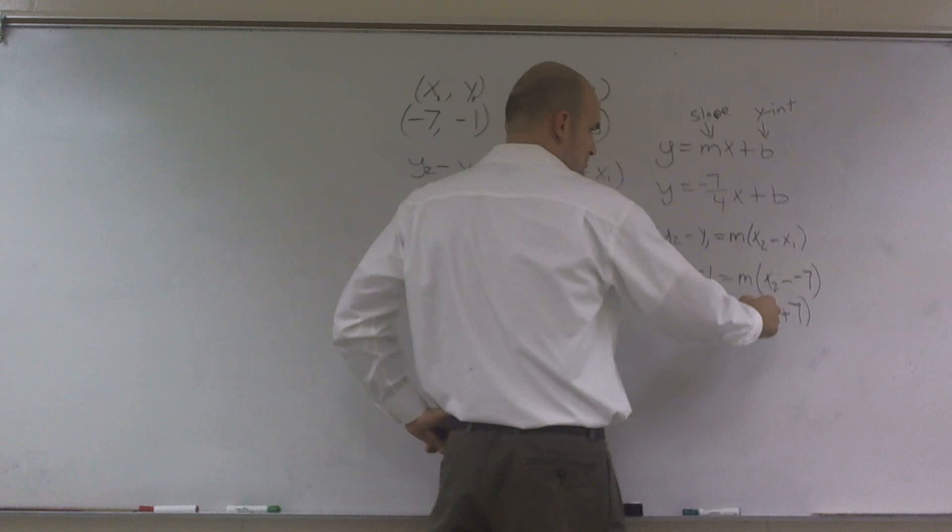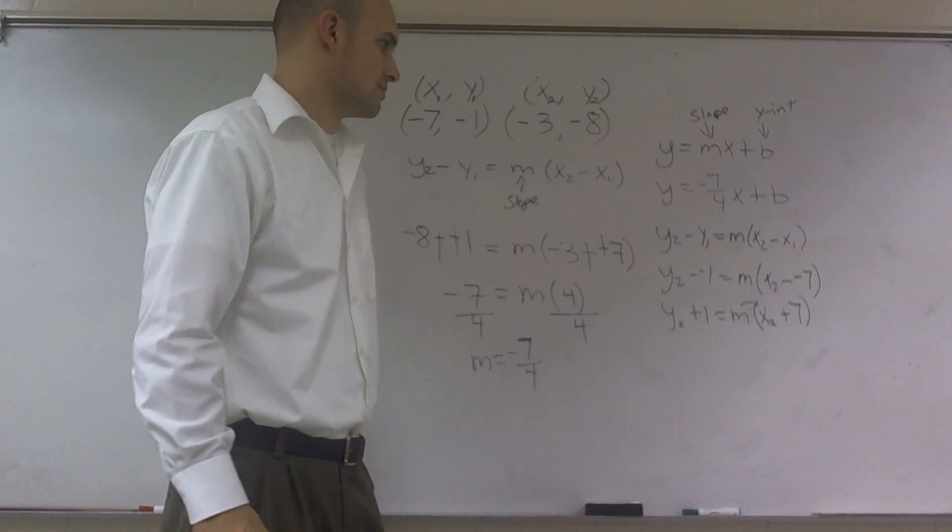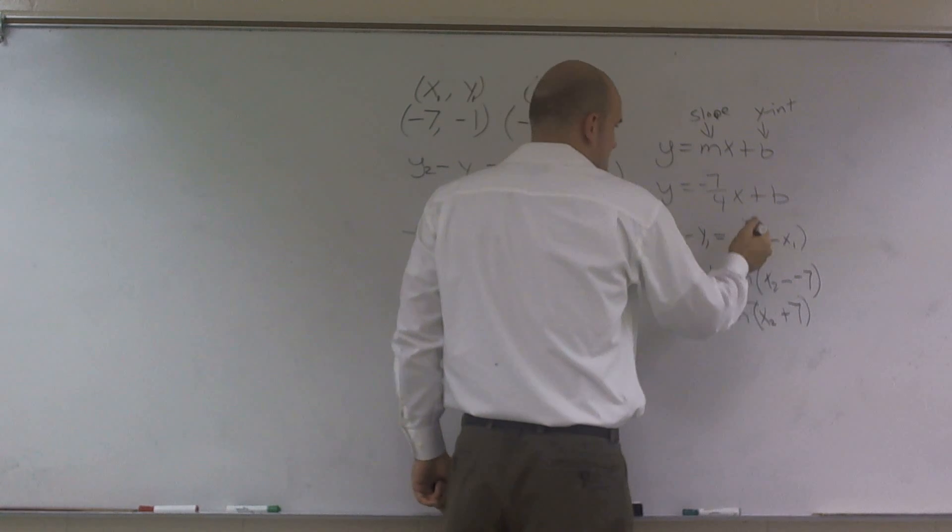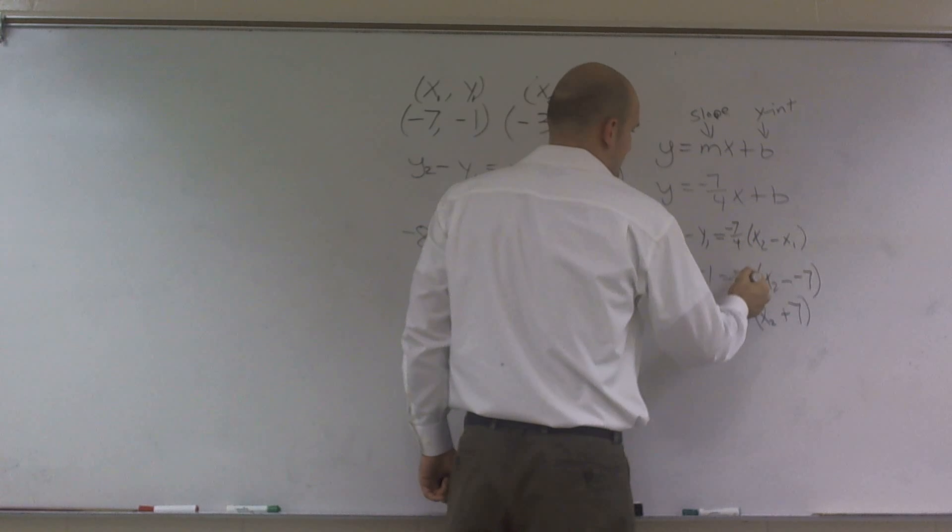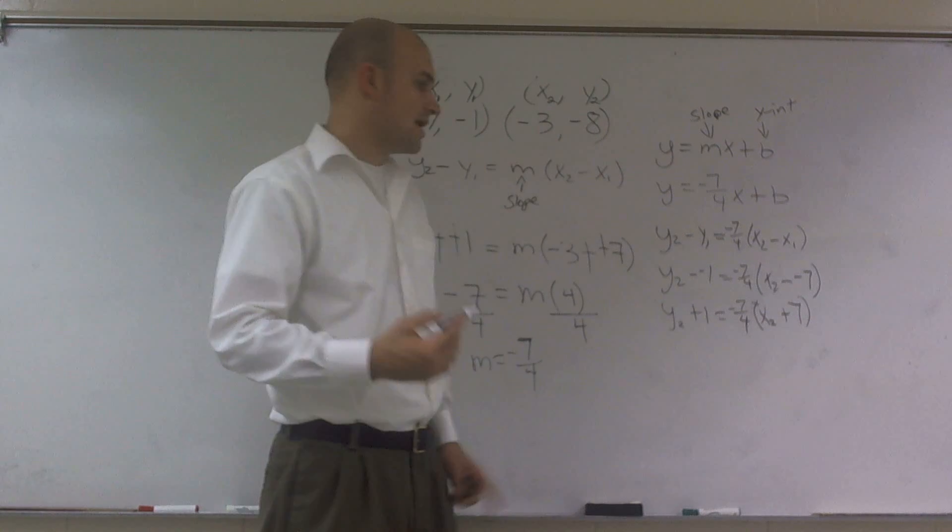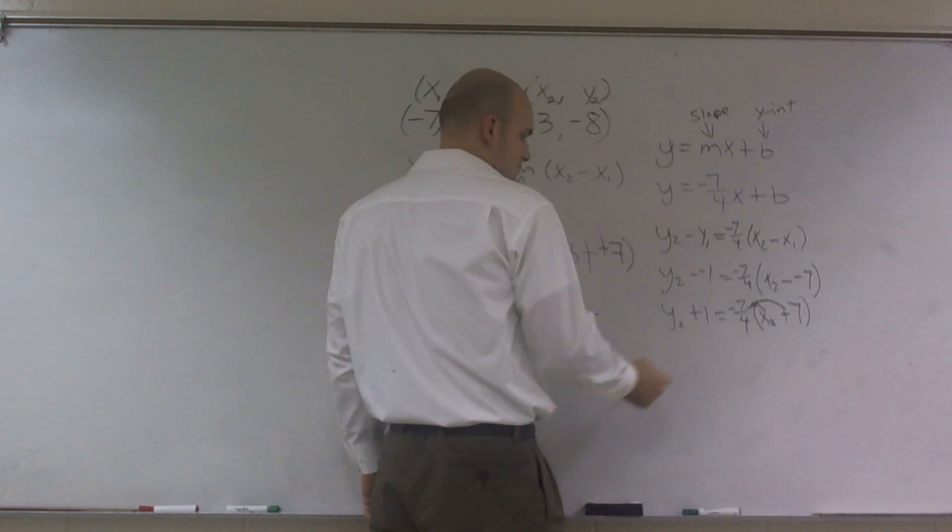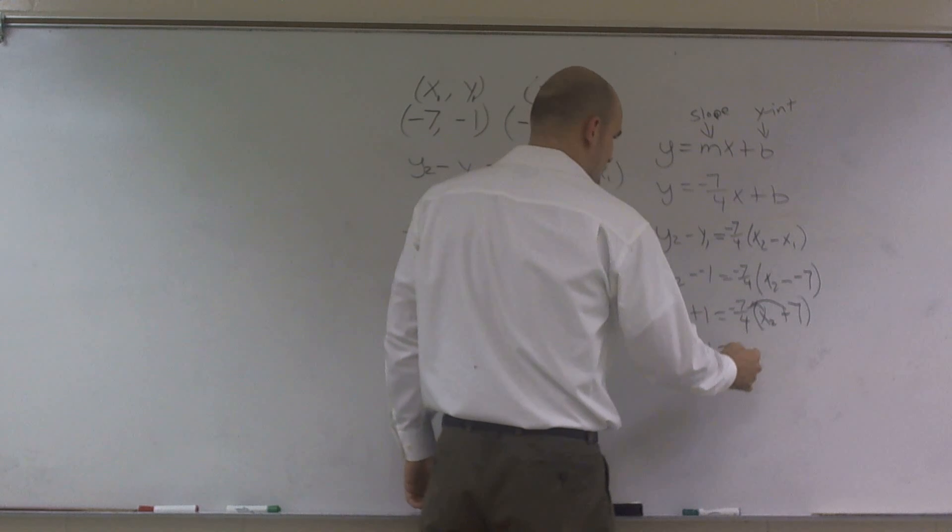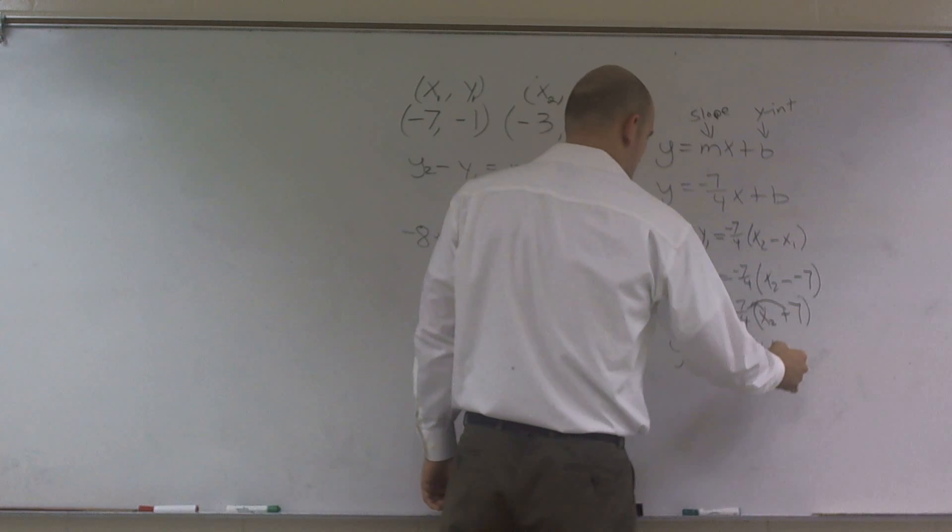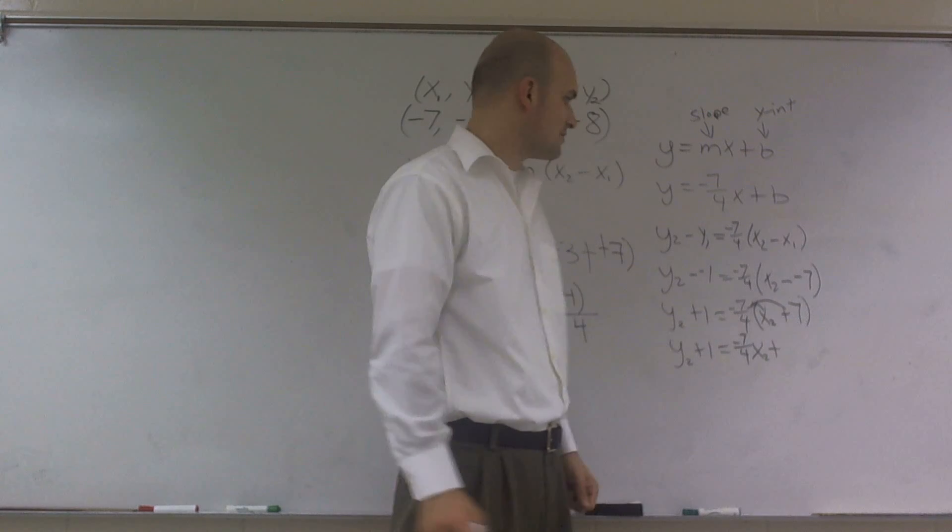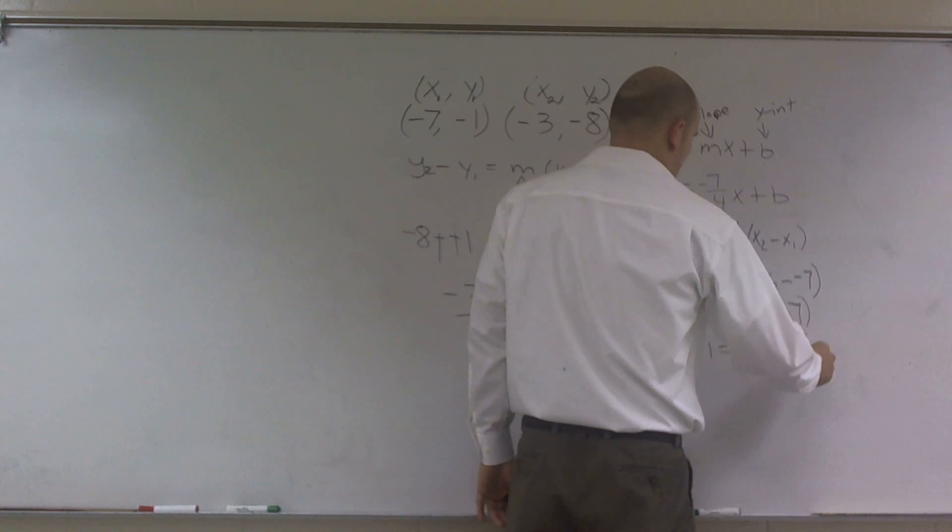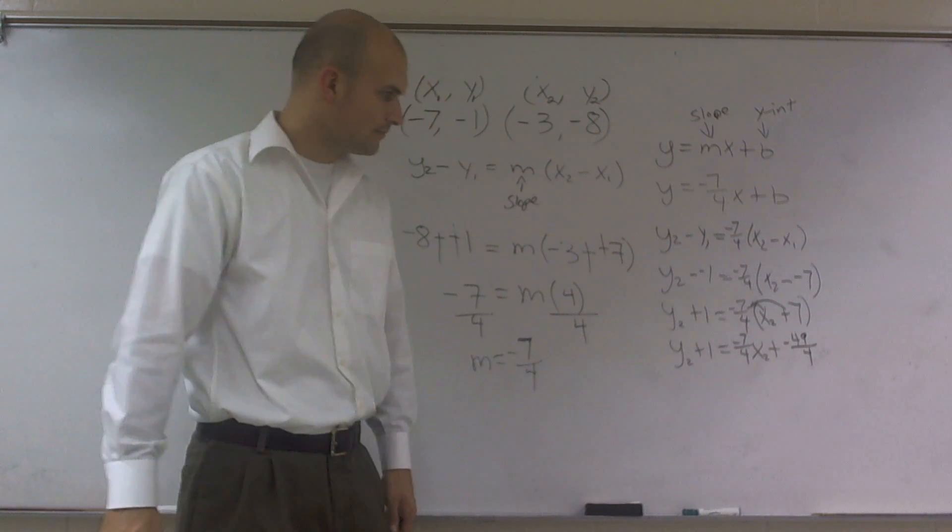Then, now what I have to do is use my distributive property. And what is our m? Our m is a negative 7 fourths, right? So we've got to write that in for m. OK? So now I have to use my distributive property. So I have y2 plus 1 equals a negative 7 fourths x2, plus a negative 7 fourths times 7, which is going to give me a negative 49 over 4. OK?